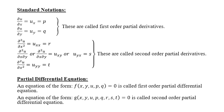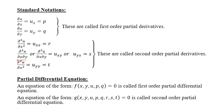There are standard notations for partial derivatives. When u is differentiated partially with respect to x, we call it u subscript x or small p. When differentiated with respect to y, it is u subscript y or q — these are the first order partial derivatives. For second order: differentiating twice with respect to x gives u_xx or r; twice with respect to y gives u_yy or t; and the mixed derivative (with respect to both x and y) is denoted s.